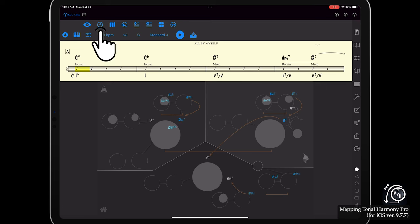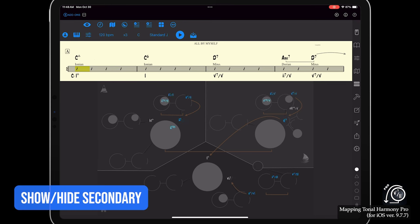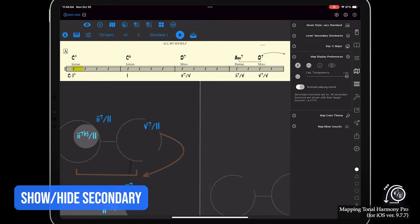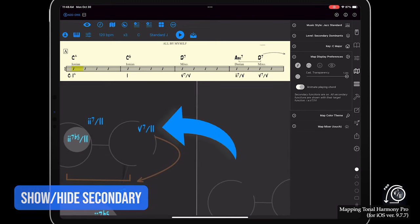If you want to show or hide secondary functional notation in the map, open the maps menu and in the map display preferences, you can toggle the secondary functional notation here. Now the five seven of two is using the slash functional notation for secondary functions.